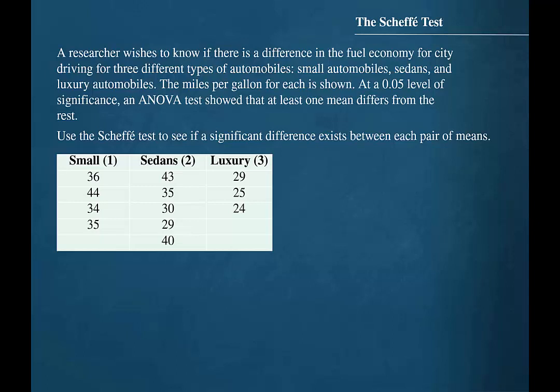The miles per gallon for each is shown. At a 0.05 level of significance, an ANOVA test showed that at least one mean differs from the rest. Use the Scheffé test to see if a significant difference exists between each pair of means.